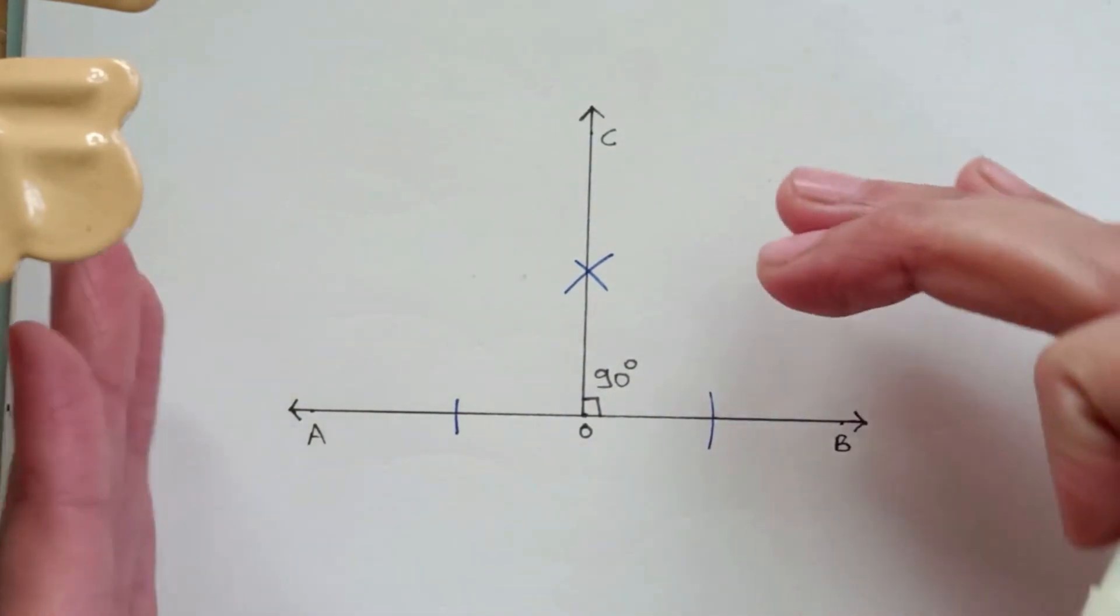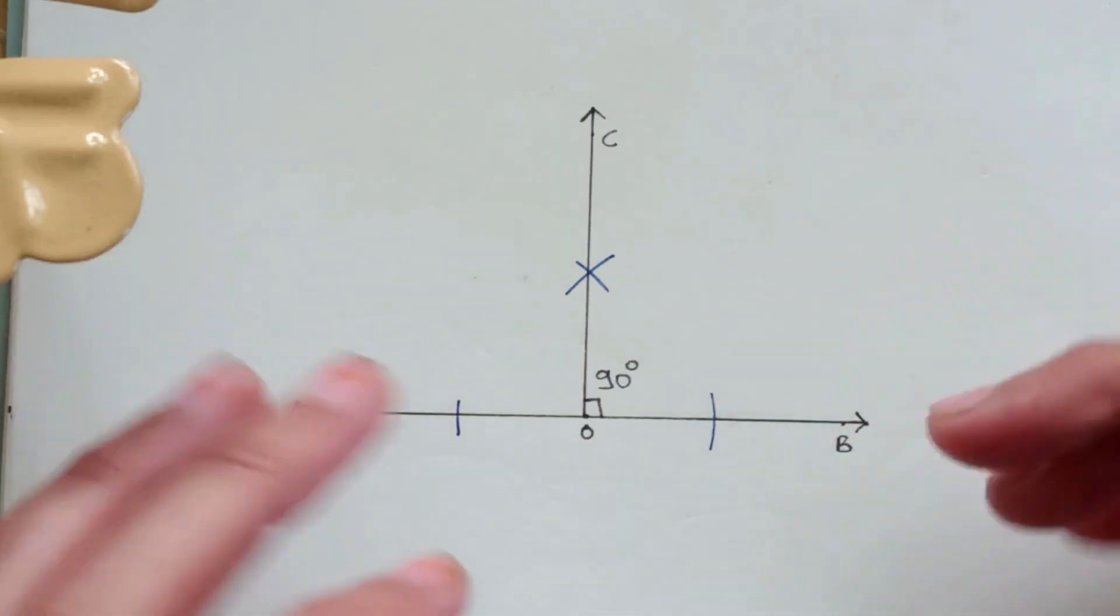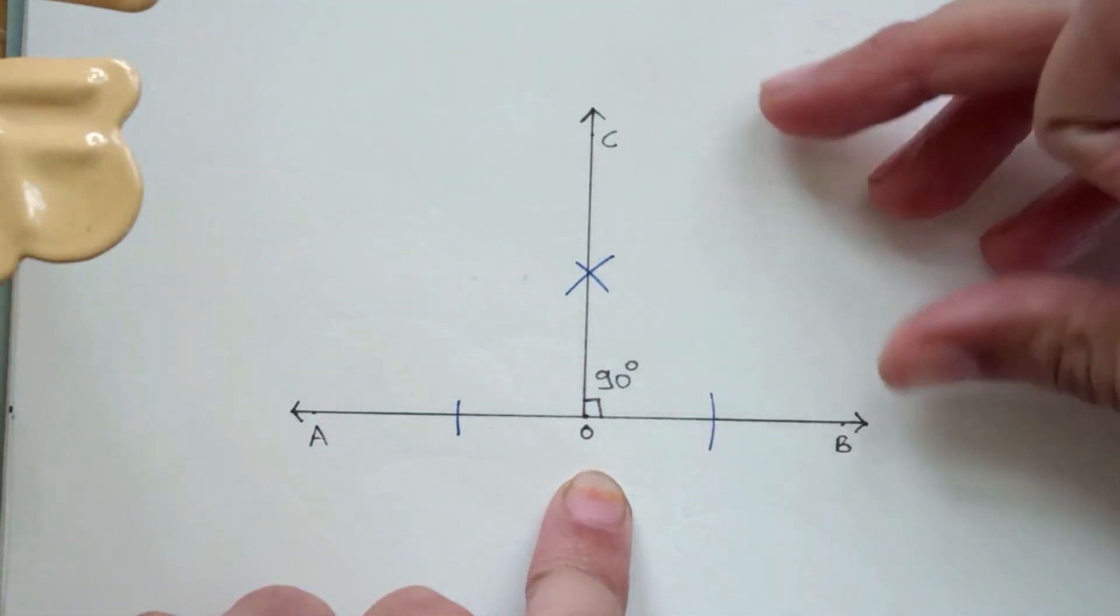Now we have to draw a 45 degrees angle. The 45 degrees angle will be in between B and C.